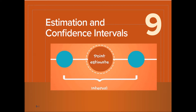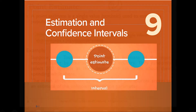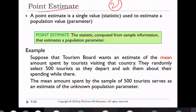Chapter 9: Estimation and Confidence Intervals. The estimate, or point estimation, is a statistic computed from sample information to estimate population parameters. For example, suppose a tourism board wants to estimate the mean — a sample of 500 can be used and generalized to estimate the population value.